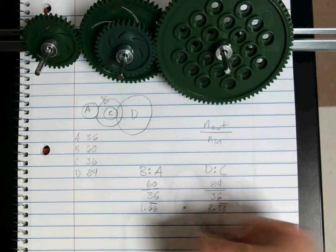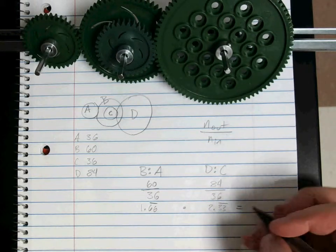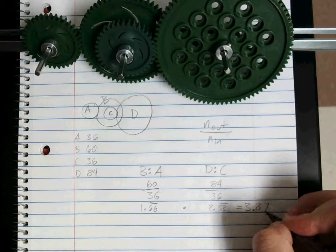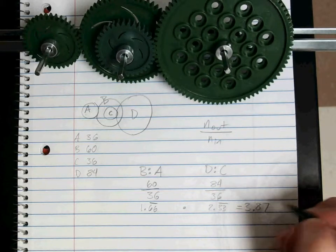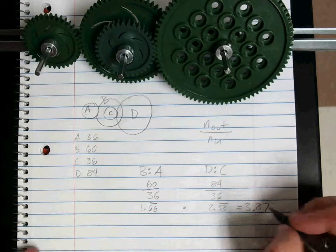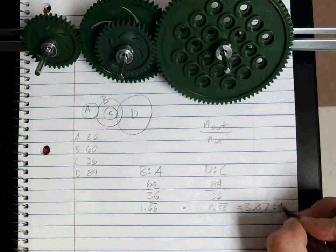When we multiply both of those, we're going to get something like this, at least for mine. It'll be 3.87 with the 3 repeating, but we'll leave it at two decimal places for now. And so our ratio would be 3.87 to 1.